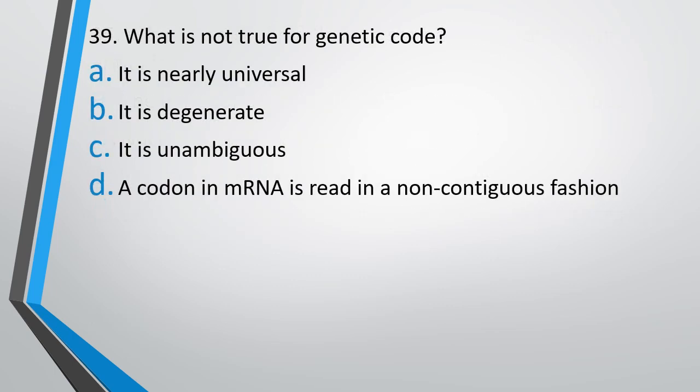Question number 39. What is not true for genetic code? It is nearly universal; it is degenerate; it is unambiguous; a codon in mRNA is read in non-contiguous fashion. The correct answer is option D — a codon in mRNA is read in non-contiguous fashion. This is incorrect; codons are read in a contiguous fashion.